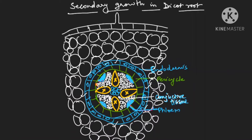Now recall that in dicot stem, cambium was present below phloem and it was present above xylem. Keep that picture in mind. I'm just drawing it once again — in dicot stem, the fascicular cambium was present below phloem and above xylem. Now see what happens in case of dicot root.